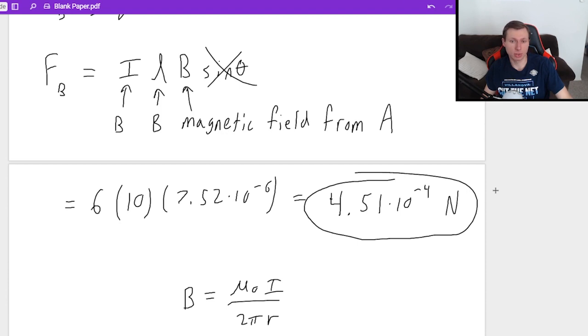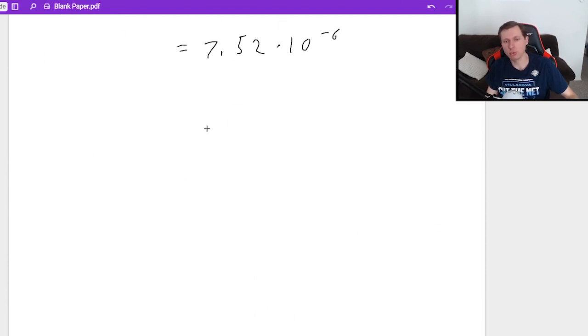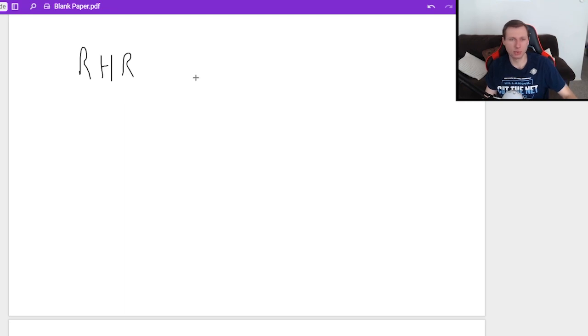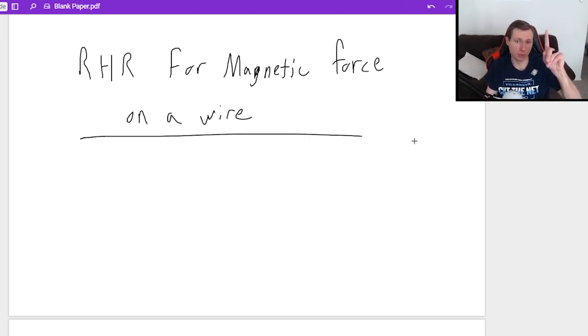Now what about the direction? We still want to know the direction. So for that, we're going to use a new right-hand rule. I swear there's like so many right-hand rules in this class. But this is the right-hand rule specifically for magnetic force on a wire.